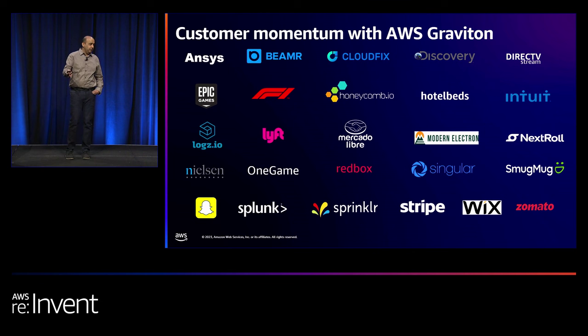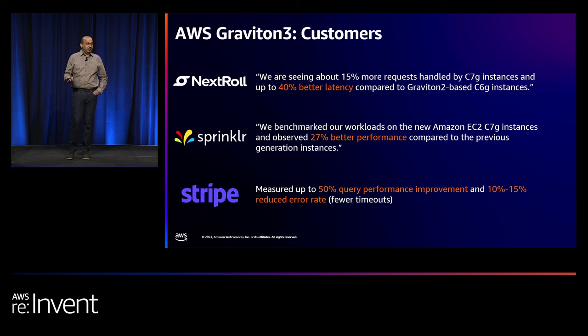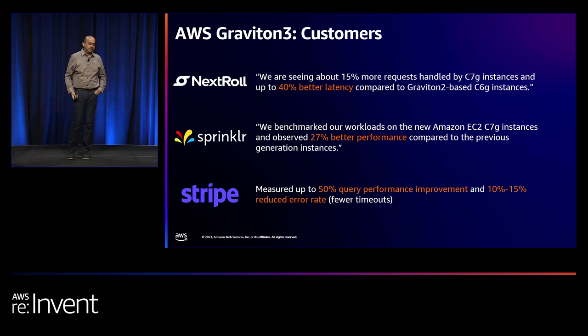In terms of customer momentum, more than 50,000 customers — including all top 100 EC2 customers — use Graviton-based instances. We see adoption across customers of every size, in every geo, across multiple verticals and industries. Customers transitioning to Graviton 3 are seeing improvements of 10-20% and up to 40-50% in some cases, as seen with Nextroll, Sprinklr, and Strike.